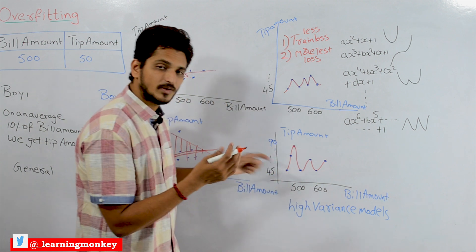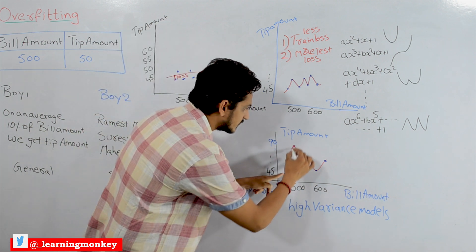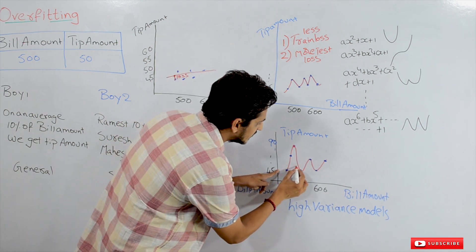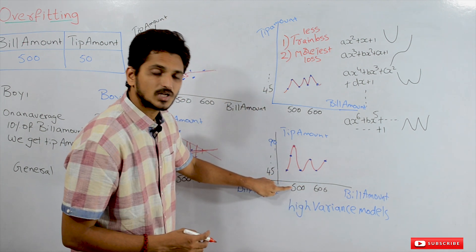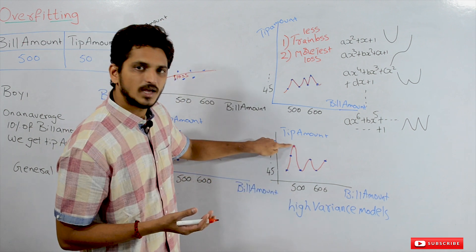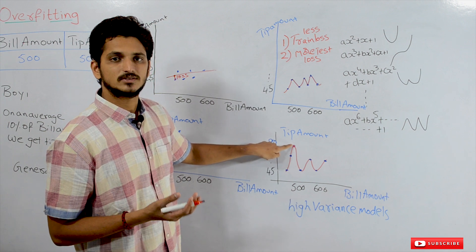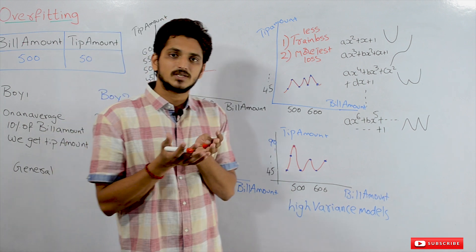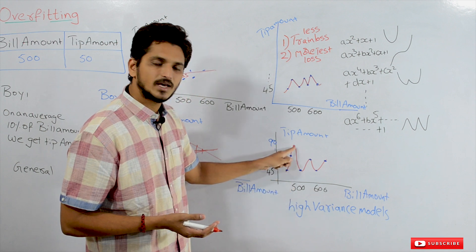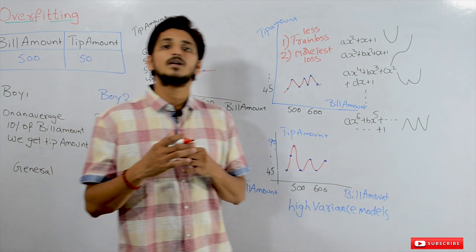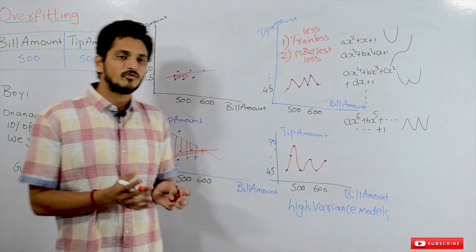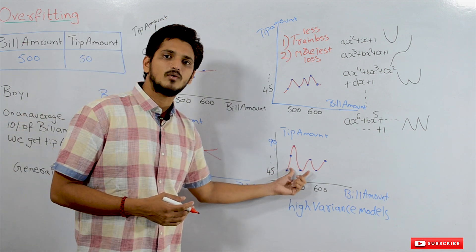Because overfitted models identify the curve so specifically, we lose generality. For example, at a bill amount of 500, most customers will give a tip of 45 to 50, but the overfitted model predicts 90 — so we get a lot of loss on testing data. That is the reason why overfitted models will have high testing loss.